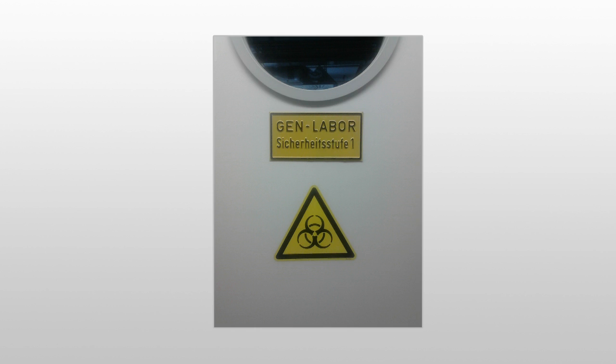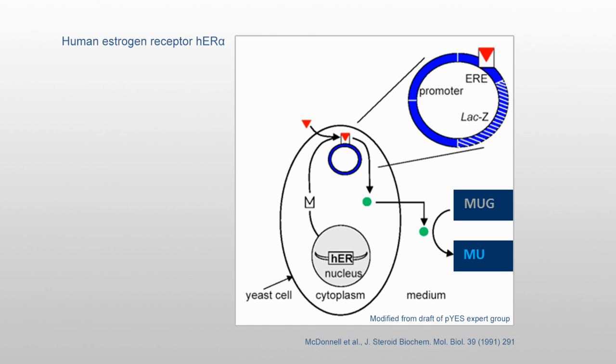The experiments were performed in an S1-certified laboratory. The PES bioassay uses recombinant Saccharomyces cerevisiae cells containing the human estrogen receptor HER-alpha, which were generated by McDonnell et al. in 1991.